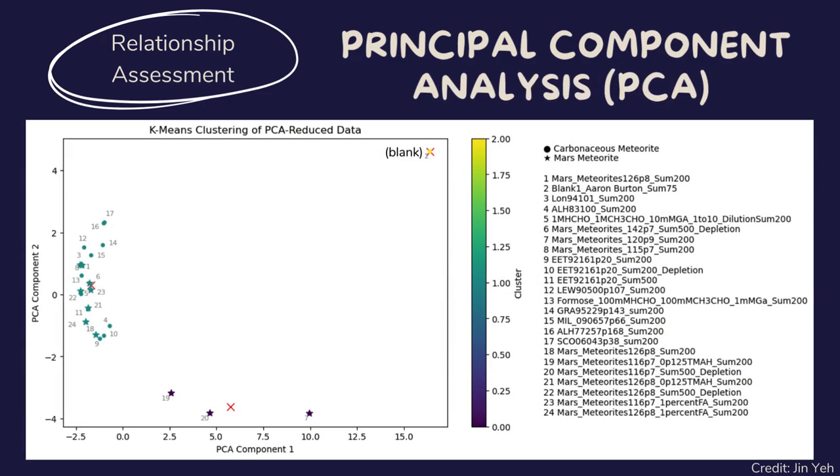PCA is a powerful technique which reduces the dimensionality of data by transforming it into a new set of variables called principal components, which capture most of the variance in data. Here, three samples have been clustered together, and the rest were grouped in another cluster. Further sub-clustering of that group could reveal distinctive features and help in better classification.